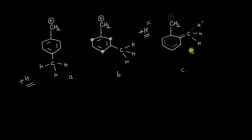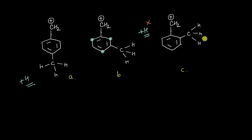Just like in the case of para, this methyl group will actively help in stabilizing the cation. If this methyl group were not present, this cation would only have been stabilized by resonance from the benzene ring, but the presence of a methyl group at ortho helps in delocalizing the positive charge even more — bringing it even onto this methyl group.